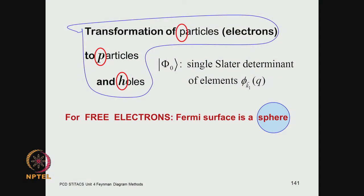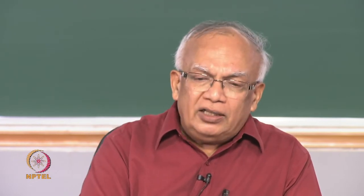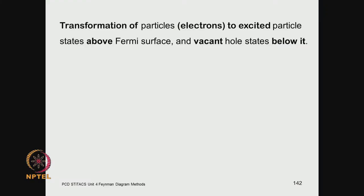Everything is filled up to the Fermi level, giving a spherical Fermi surface for a free electron gas. We can extend this to more complex systems — electrons in a molecule, in some other symmetry, in a periodic potential as in a solid, or in bulk matter — using the same techniques and the foundations we are laying down here.